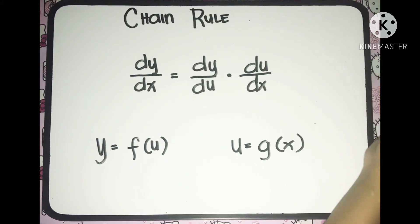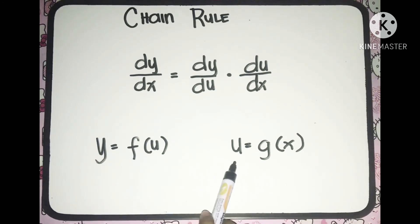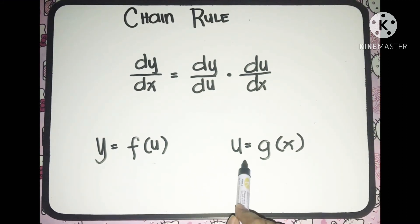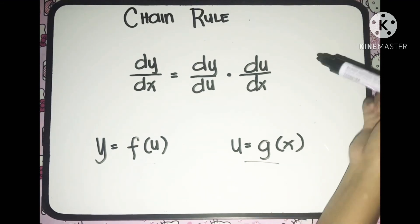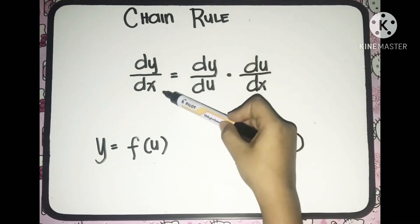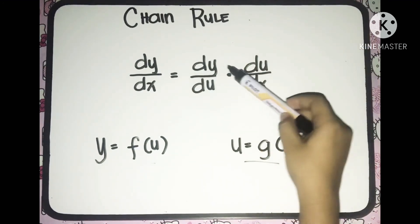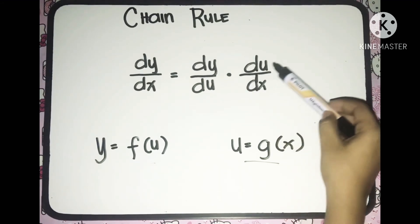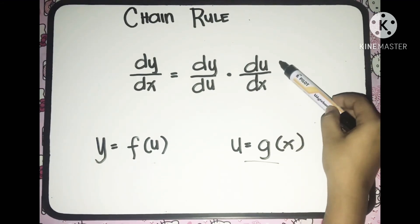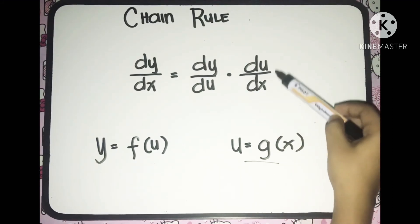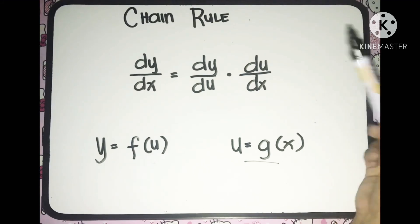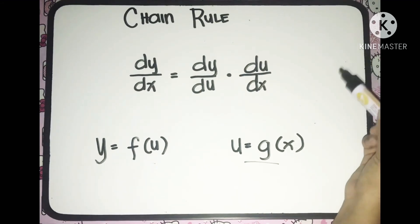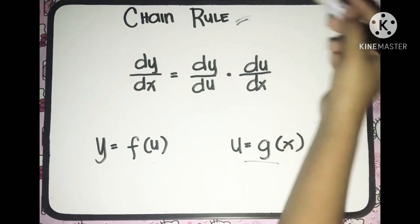Suppose that we have two functions: y is equal to f of u, and u is equal to g of x. Then the derivative of y with respect to x is equal to the derivative of y with respect to u, multiplied to the derivative of u with respect to x. So this is the formula for chain rule.